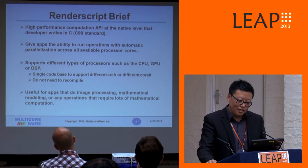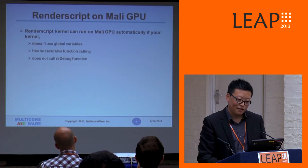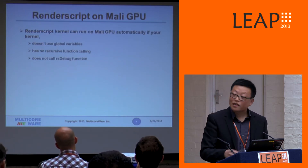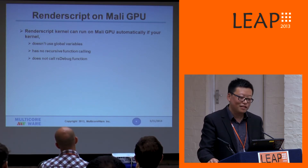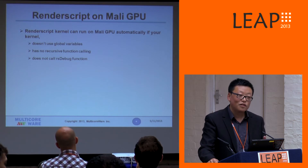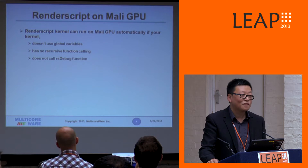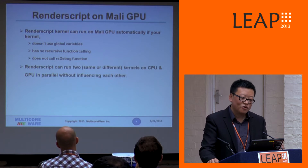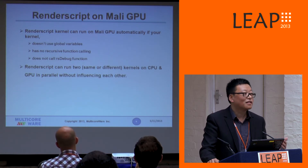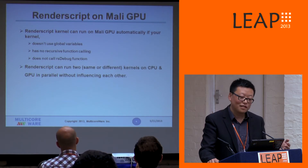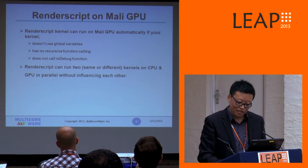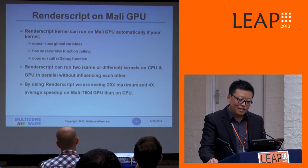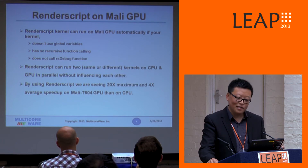I want to highlight some of the experience we have learned during our work. If you follow these rules, you can ensure your RenderScript kernels run on the Mali GPU. Using RenderScript on GPU, you can run two different or identical kernels on CPU and GPU at the same time without influencing each other, taking full advantage of available compute power. Through our practice, we are seeing up to 20x speedup, and on average about 4x speedup on the Mali T604 GPU compared to the CPU.